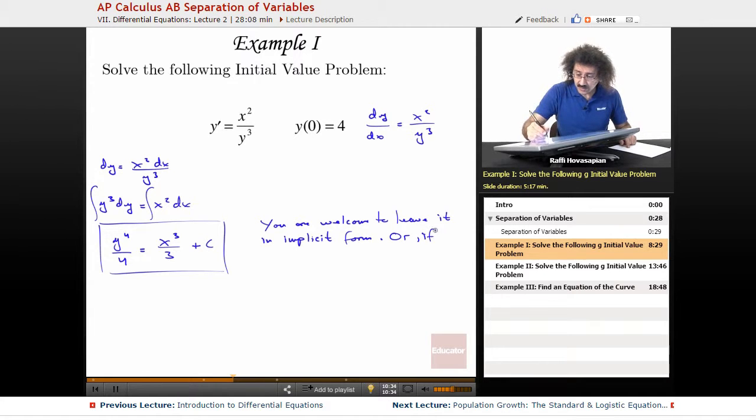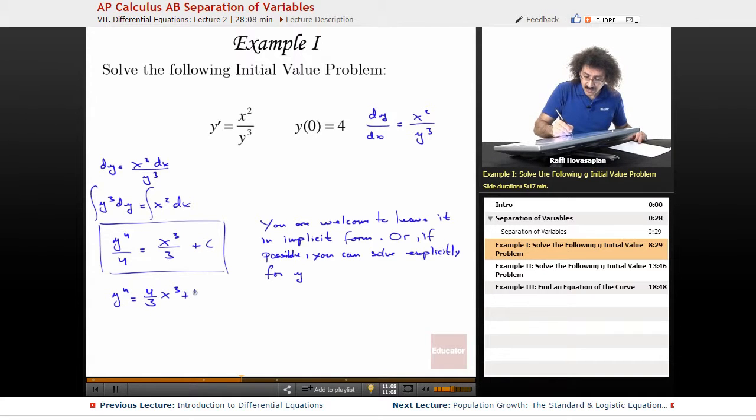Or, if possible, sometimes it's not going to be possible, sometimes it is, you can solve explicitly for y. In this particular case, it ends up being, I multiply by four, so I end up with y to the fourth equals four-thirds x cubed plus four-c and I get y equals four-thirds x cubed plus four-c all to the one-fourth power.